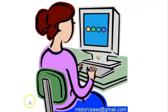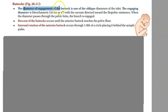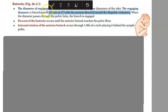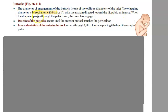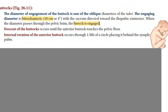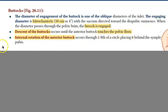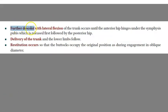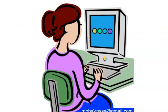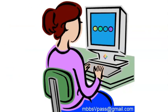Let's recap. For the buttocks: the engaging diameter is bitrochanteric, 10 centimeters. When this diameter passes the pelvic brim, breech gets engaged. Then descent occurs, internal rotation as soon as it touches the pelvic floor, further descent, lateral flexion, the trunk is delivered, and then restitution.